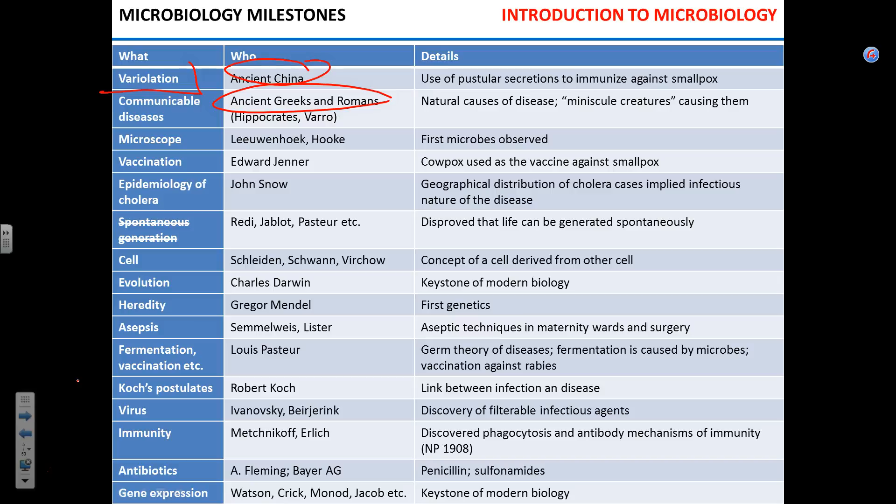Now we come to vaccination. In 1796, Edward Jenner, a British physician, noticed that milkmaids who contracted cowpox — a cow disease causing rash on the hands — never acquired smallpox afterward. He concluded that cowpox infection protects against smallpox. He then inoculated farm boy James Phipps with cowpox material, and a couple of weeks later inoculated the same boy with actual smallpox. If the idea was wrong, the boy would have died. It worked — James Phipps survived.